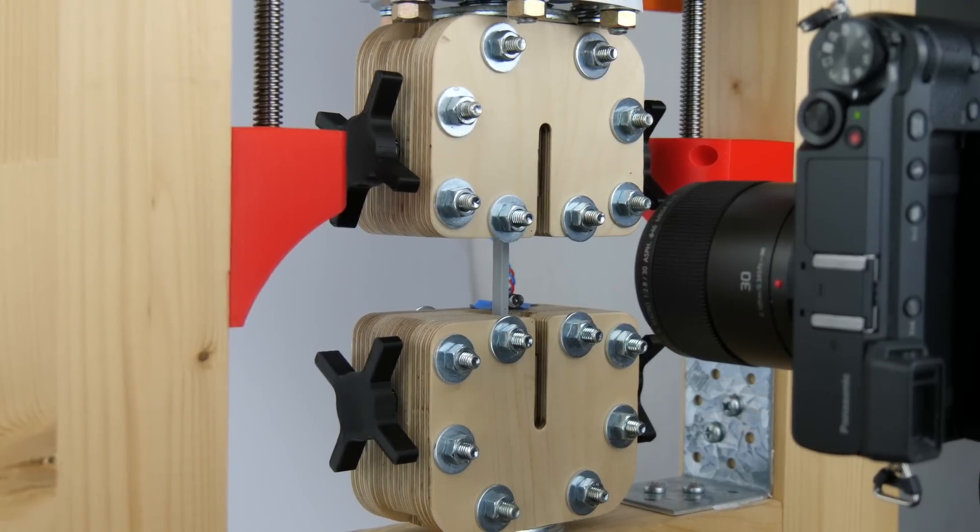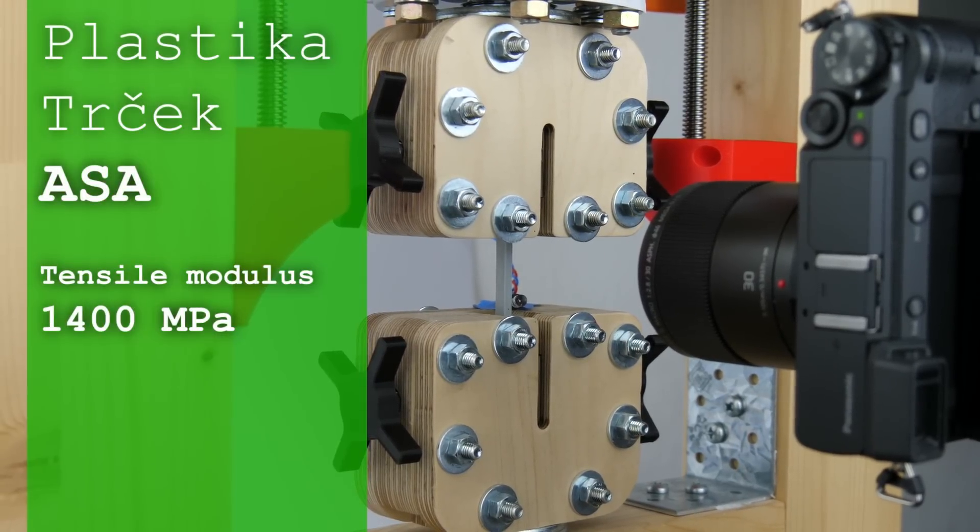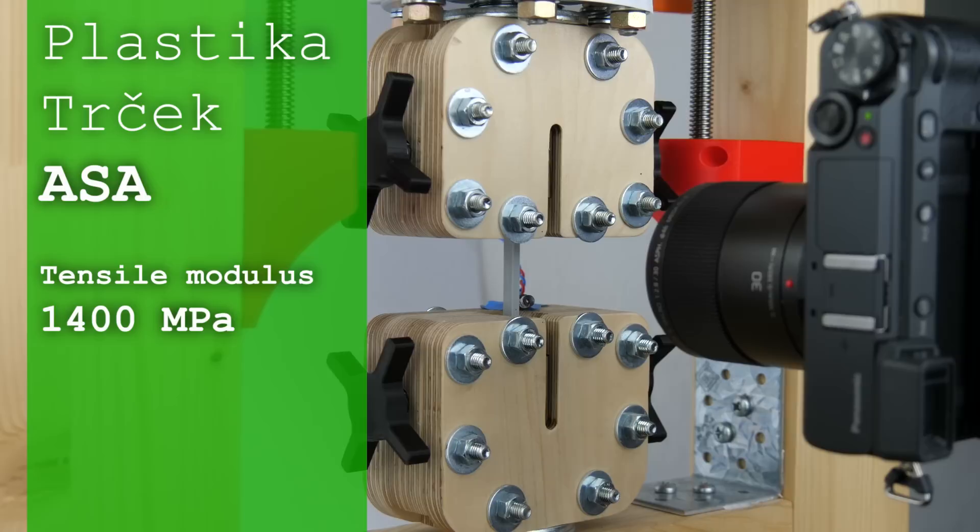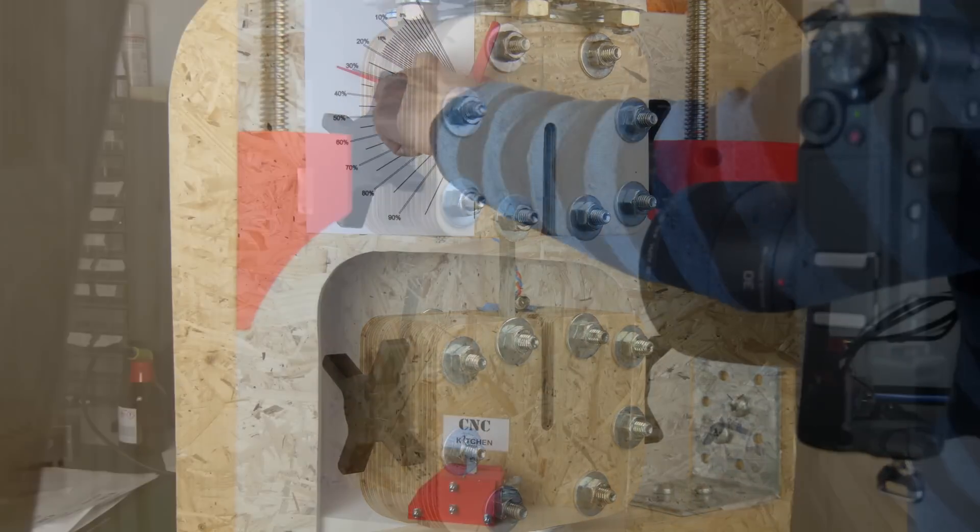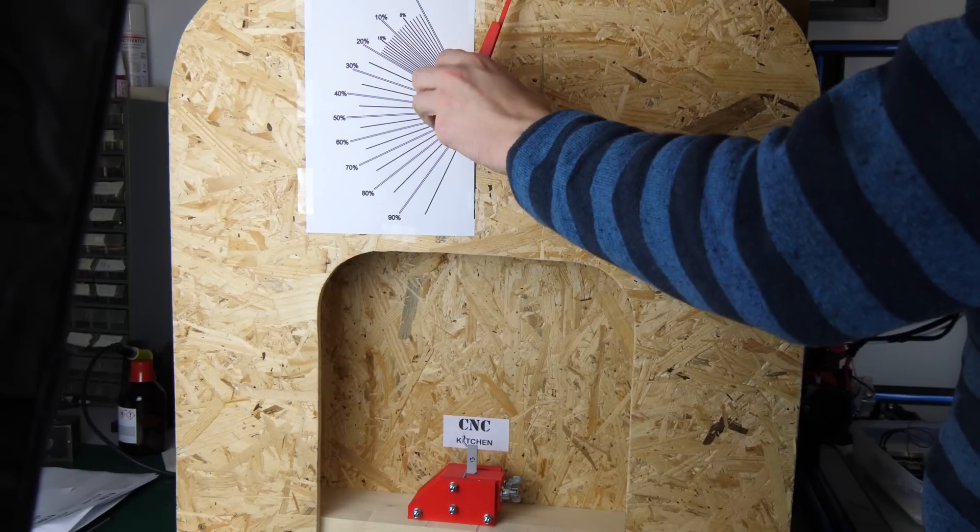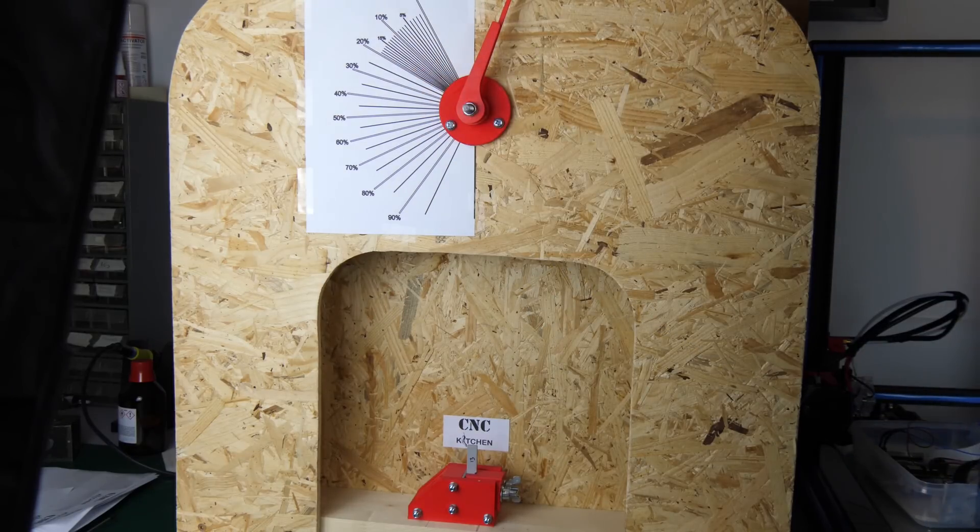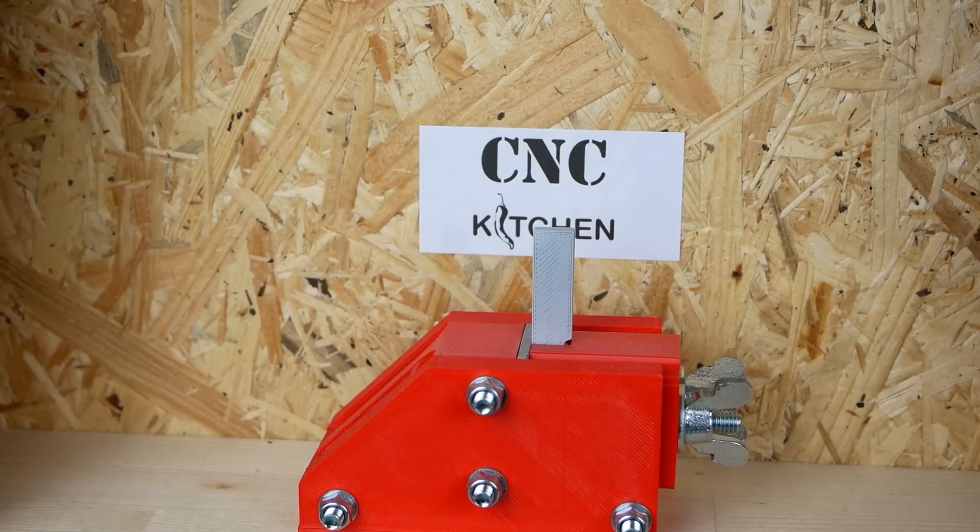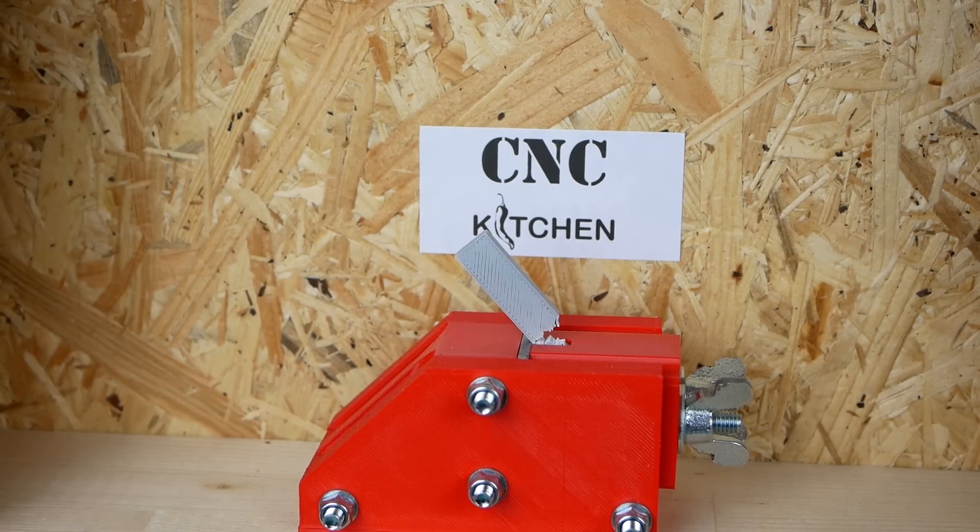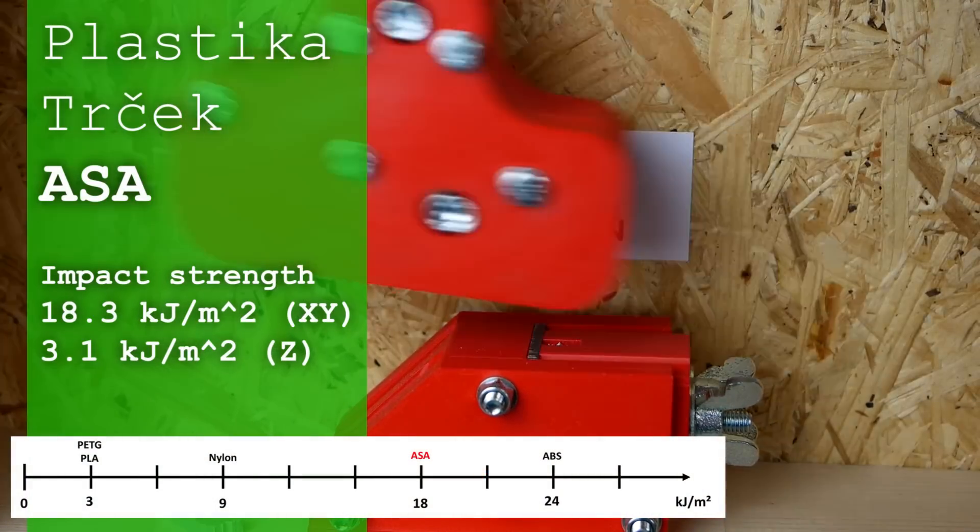With a tensile modulus of 1400 MPa this ASA is one of the less rigid materials with a little more than half of the stiffness of PLA. Impact resistance was good and the specimens that were printed lying were able to absorb around 30% of the energy of the impact hammer and didn't even break all the way through ending up with an impact strength of 18 KJ per square meter.